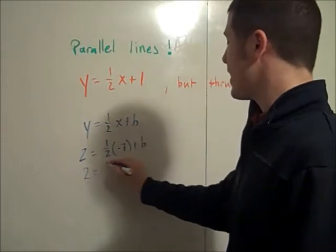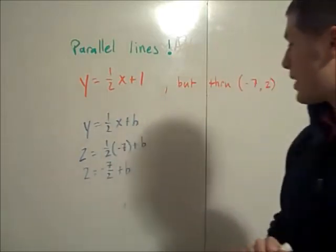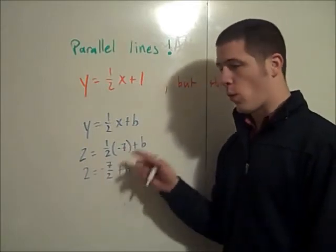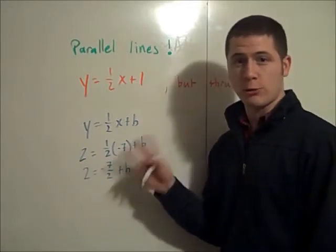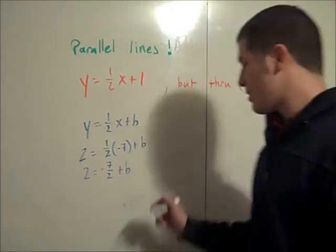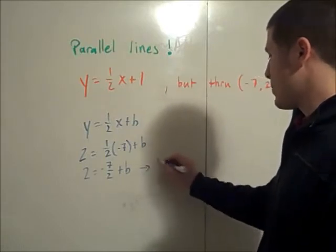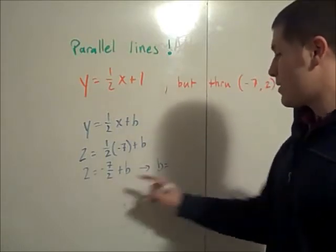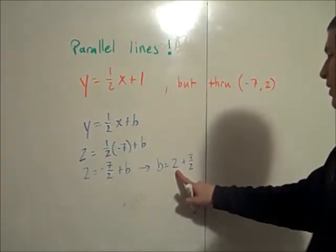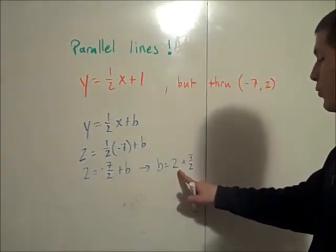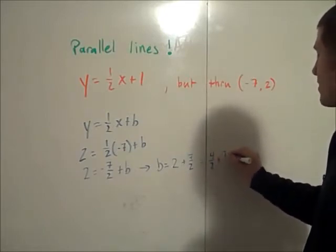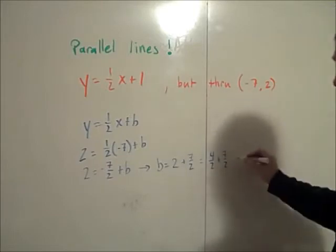So 2 is -7/2 plus b. I multiplied 1/2 by -7. This is -7 over 1. To multiply fractions you just multiply straight across. So I have -7/2. To get b by itself we add 7/2 to both sides. So this tells me that b is 2 plus 7/2. To get a common denominator here I multiply the 2 top and bottom by 2. I get 4/2 plus 7/2 which is 11/2.